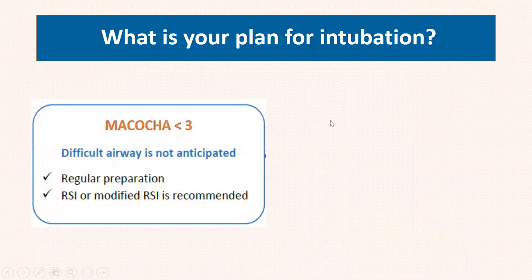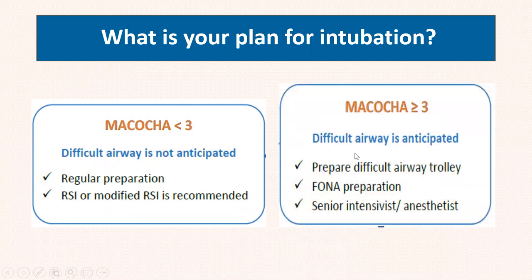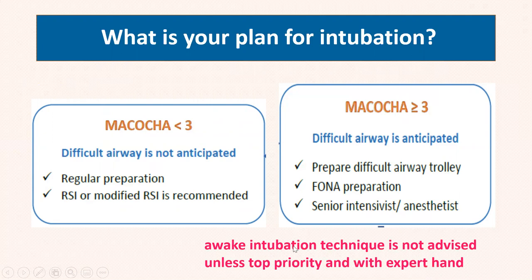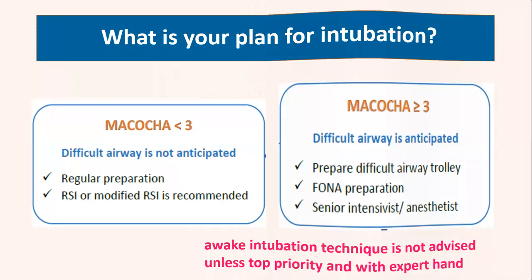The intubation plan: if the MACOCHA score is less than three, proceed with regular preparation and rapid sequence induction. If three or more, difficult airway is anticipated — prepare additional tools for difficult airway management, be ready for front-of-neck access and cricothyroidotomy at any time, and this should only be done by a senior anesthetist or intensivist. In COVID-19 patients, awake intubation is not preferred or advised due to aerosolization of the virus, unless it is top priority and done only by expert hands.